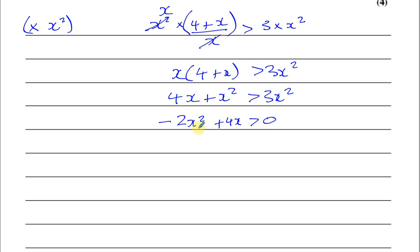If I want to now, I can divide both sides by negative 2. In that case, the sign has to change the other direction. So I'll end up with x squared minus 2x is less than 0.